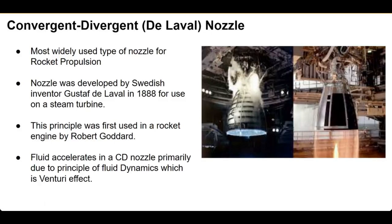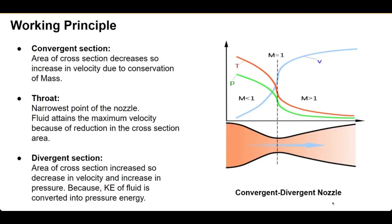If you are familiar with fluid dynamics, you would have come across the Venturi effect and Bernoulli's principles in your curriculum, or in a mechanical engineering fluid mechanics course. So let's see what a de Laval nozzle is. It basically consists of three parts: the converging section, the throat part which is the narrowest section, and the diverging section where the area increases again. The combustion chamber is here, and the exhaust gases enter the convergent section.